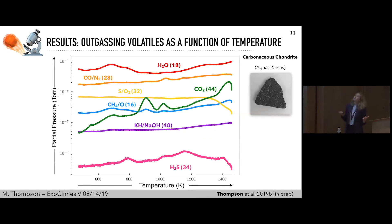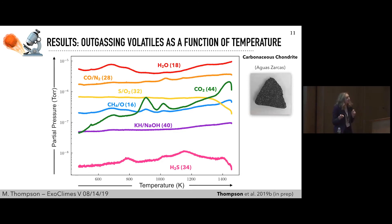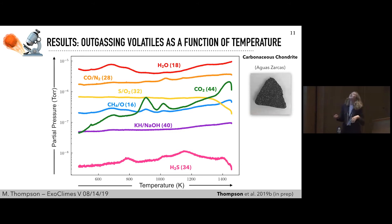Here's an example of some of our results. This is data we took for a really interesting carbonaceous chondrite called Agua Zarcas — it was a fall in Costa Rica this year. For those who read about it in the news, it fell onto a dog house. The dog is fine, and the dog was named Rocky, which is very appropriate. This is showing the partial pressure of different gases as a function of the temperature we're heating our samples to.